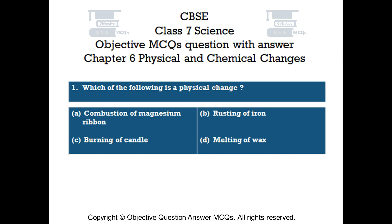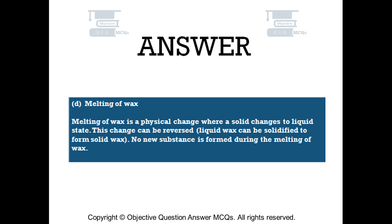The right answer is Option D: Melting of Wax. Melting of wax is a physical change where a solid changes to a liquid state. This change can be reversed — liquid wax can be solidified to form solid wax. No new substance is formed during the melting of wax.